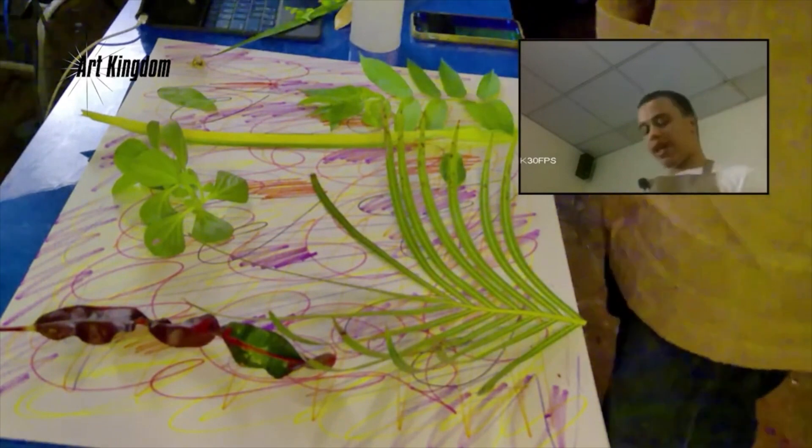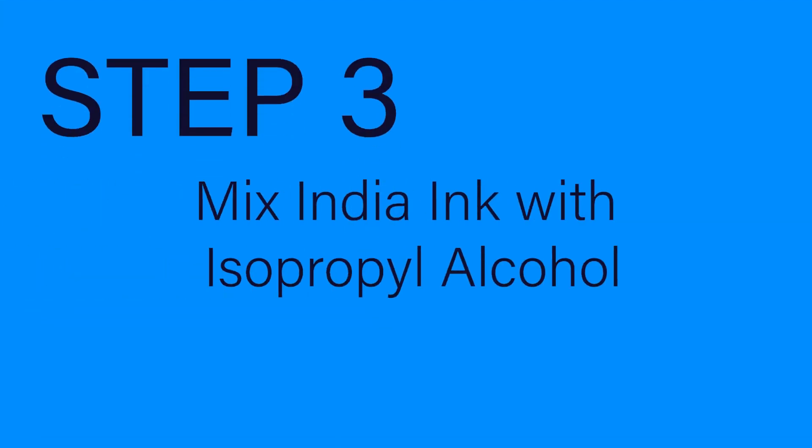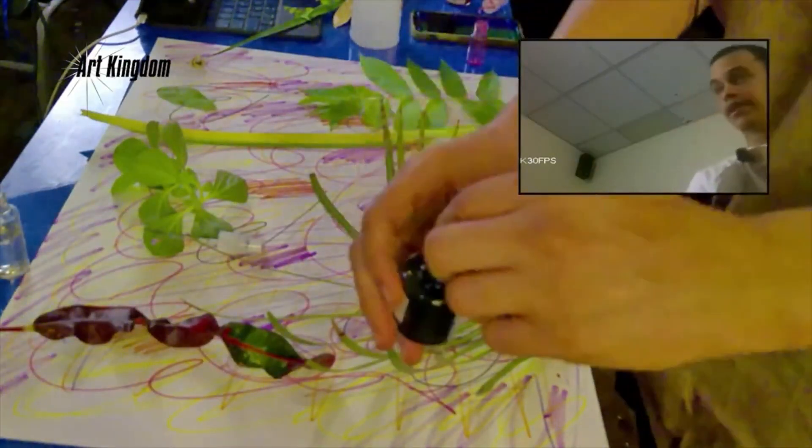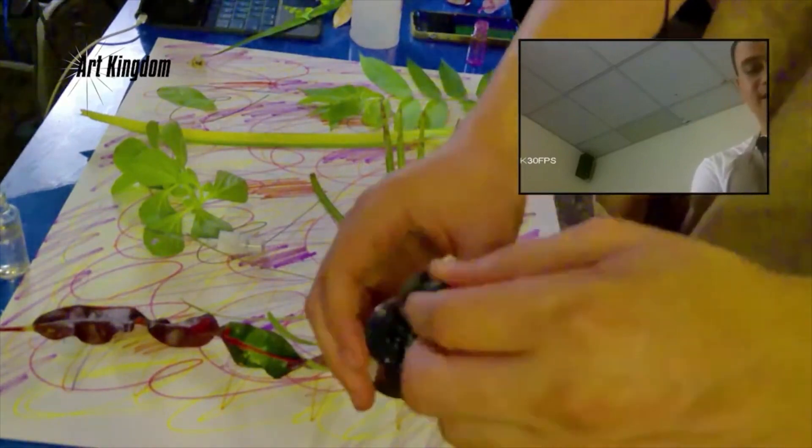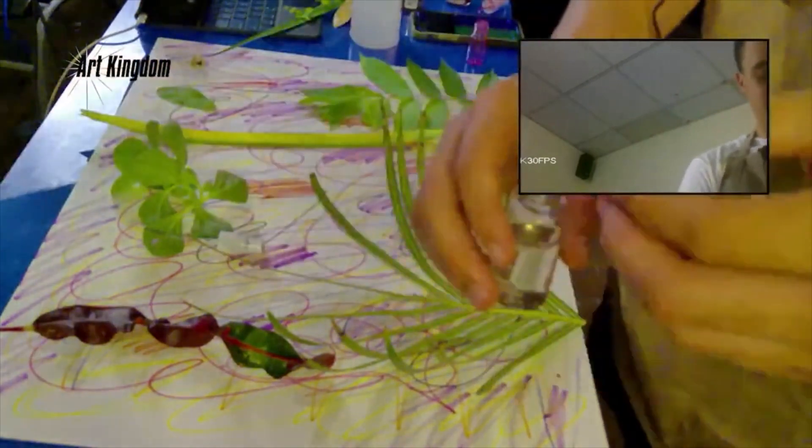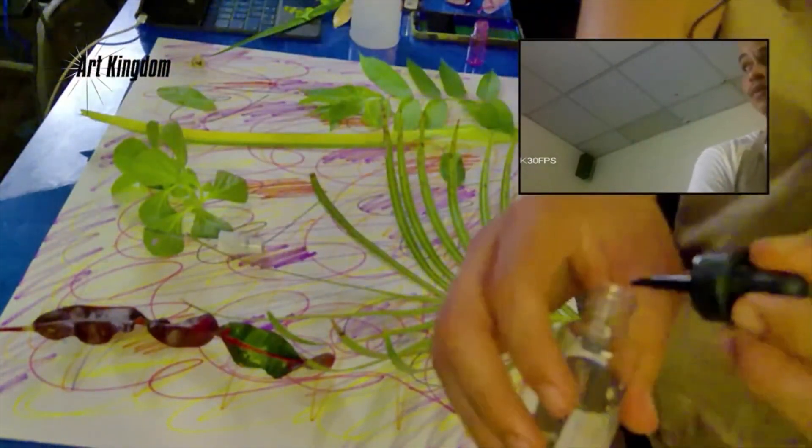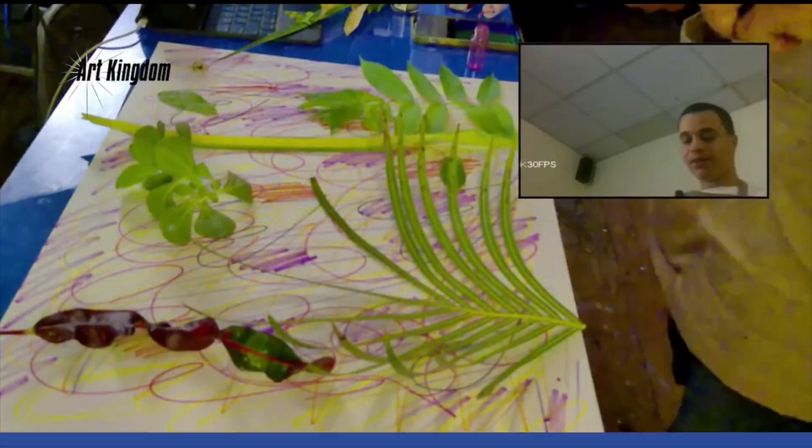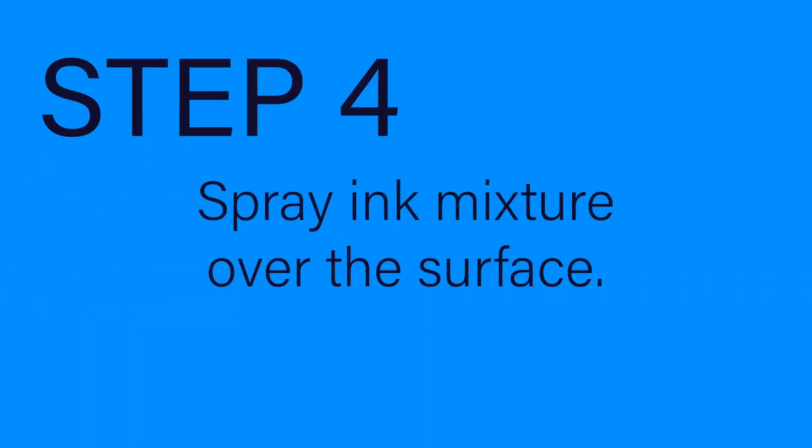I have India ink, black and red, and I have two spray bottles. I'm putting some alcohol in the bottle. I take a little drop of my black India ink and I'm going to mix it into my bottle here. What I want to do is just spray my ink over the surface of my entire paper here.